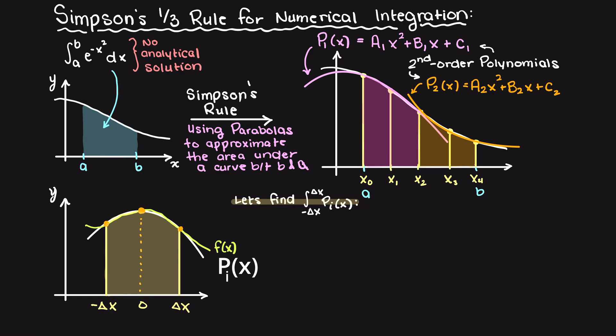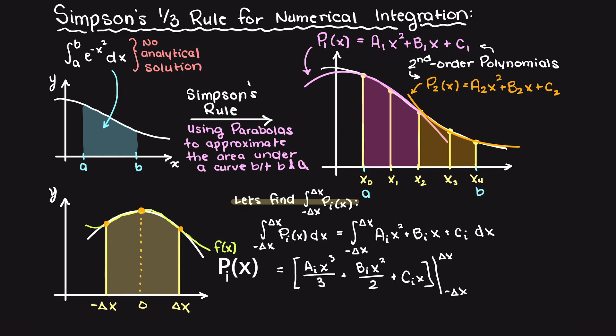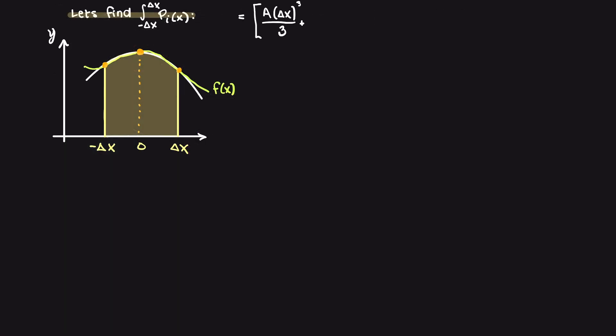Let's begin by substituting in our general second order polynomial equation and integrate with respect to x at our bounds. This leaves us with a times x cubed over 3 plus b times x squared over 2 plus cx. Now, let's take a minute and apply our integral bounds, and this results in the following equation.